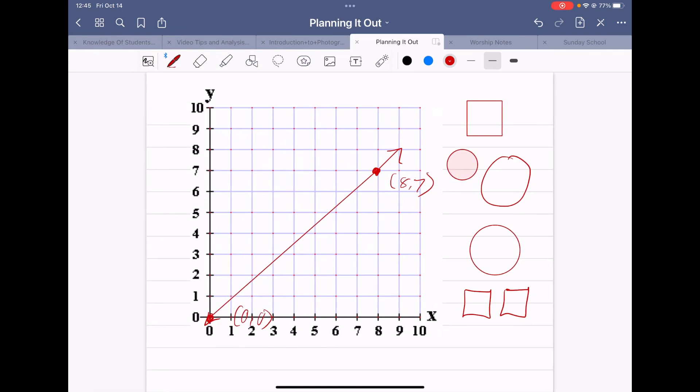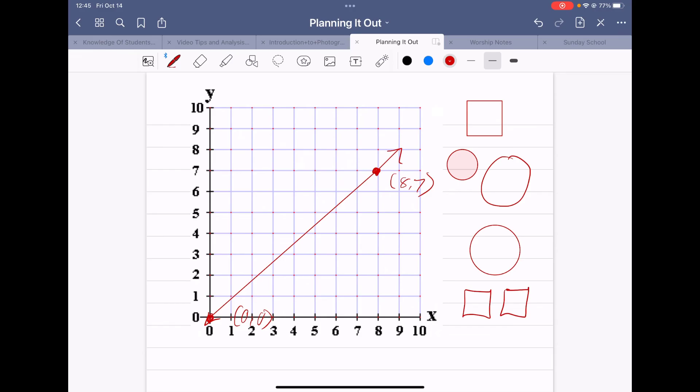Now I'm going to draw my circle and hold it, and it filled it in with a fainter color of red. Just some handy little tools you can use once you get to know GoodNotes better.